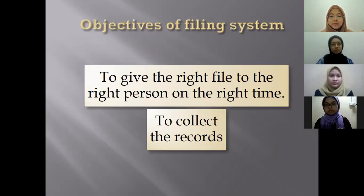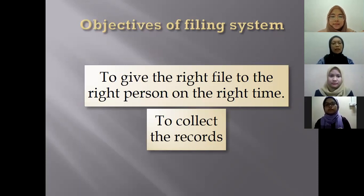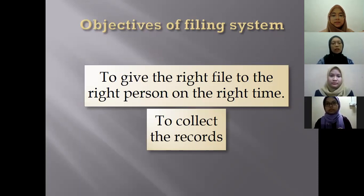Next is the objective of filing system. First is to give the right file to the right person at the right time, meaning to allow the potential user to retrieve the correct file without needing a lot of time to search. The second objective is to collect records — collecting all files and records from different sources and departments to ease the retrieval of records.